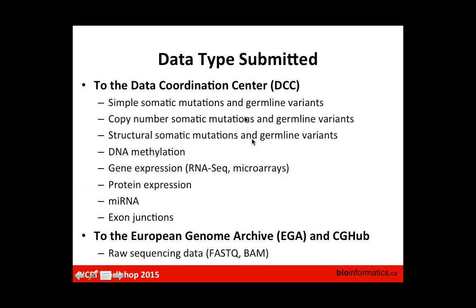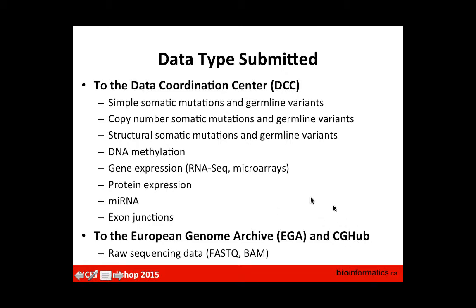For the data coming to us, those are analyzed high-level data: simple somatic mutations, germline mutations, copy number mutations, structural variants, DNA methylation, gene expression, protein expression, microRNA, and exon junction. These are data analyzed from raw data, primarily sequencing data. The raw sequence data is submitted to EGA, as Francis mentioned. For TCGA, they submit to CGHub in the form of FASTQ or BAM files.